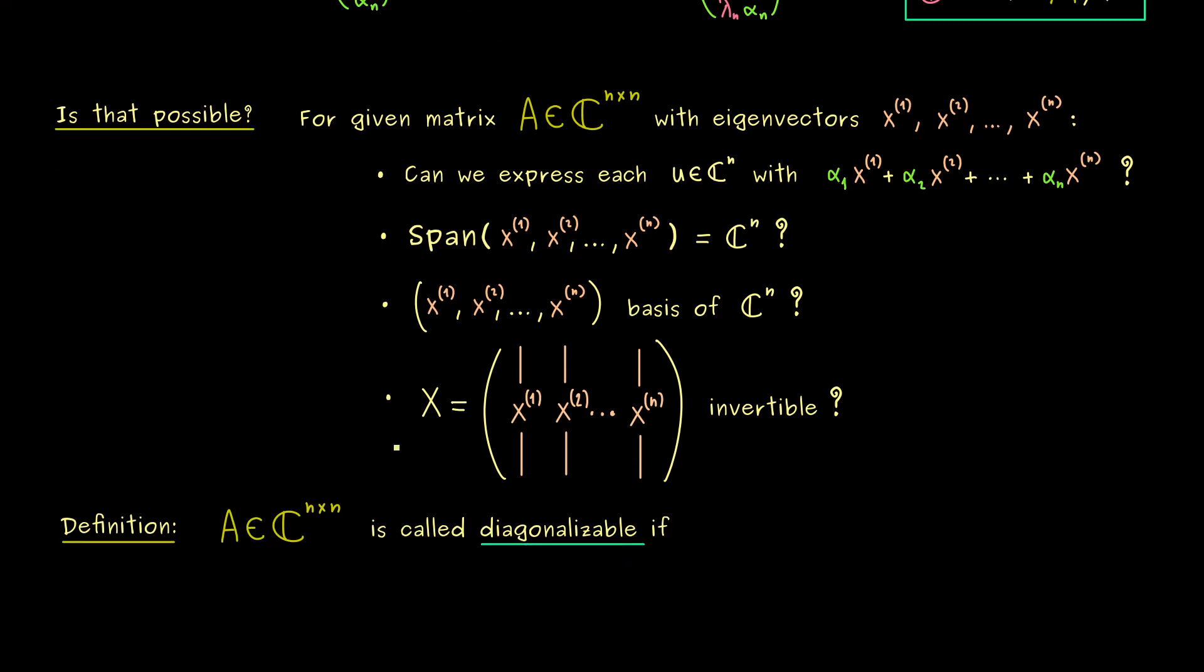And please note, this term only makes sense for a square matrix. Now, by the equivalence of the questions above, we could choose any statement there, but usually we choose the one with the basis. This means, one has to find n eigenvectors of A, such that they form a basis of the whole space C^n.